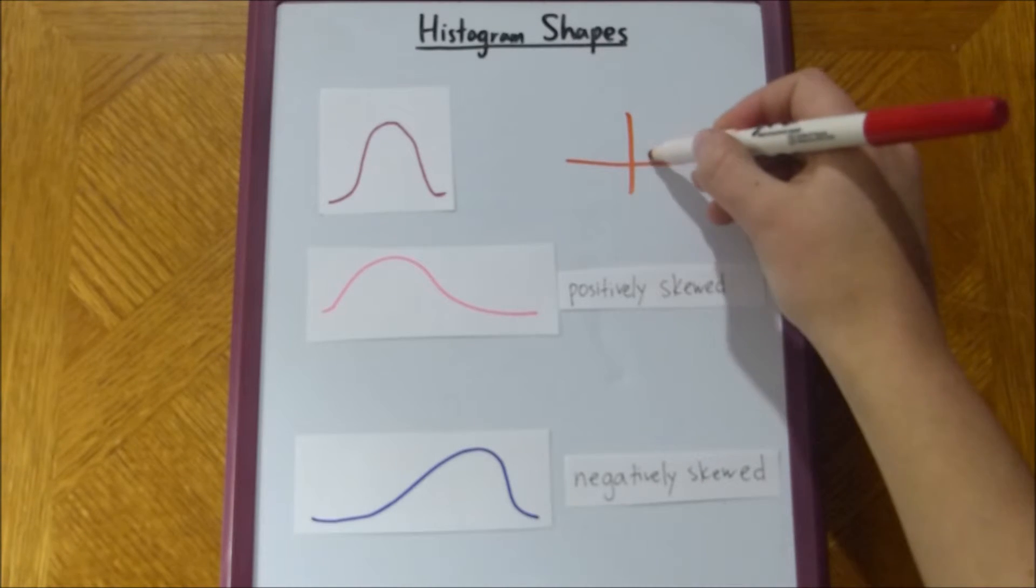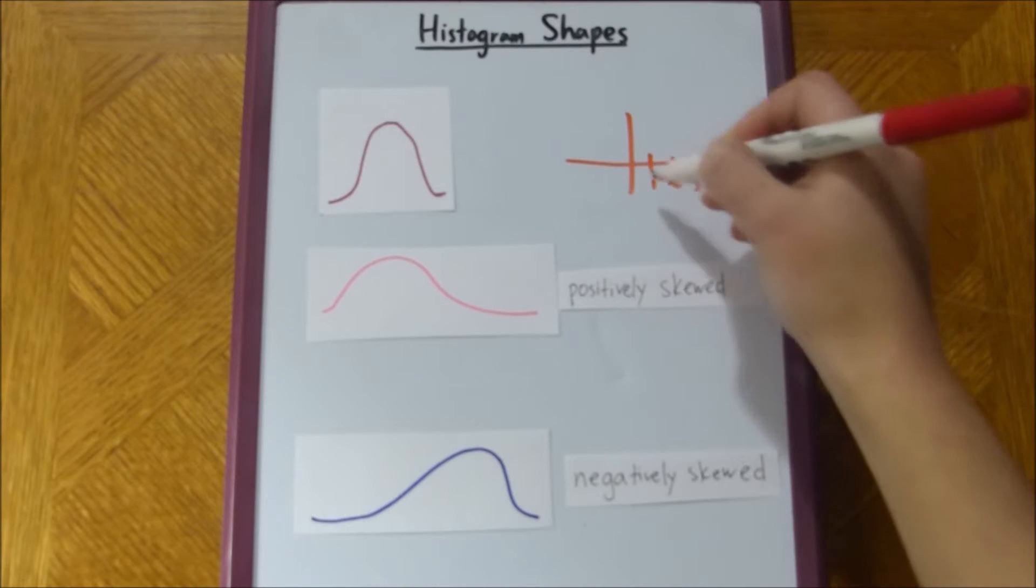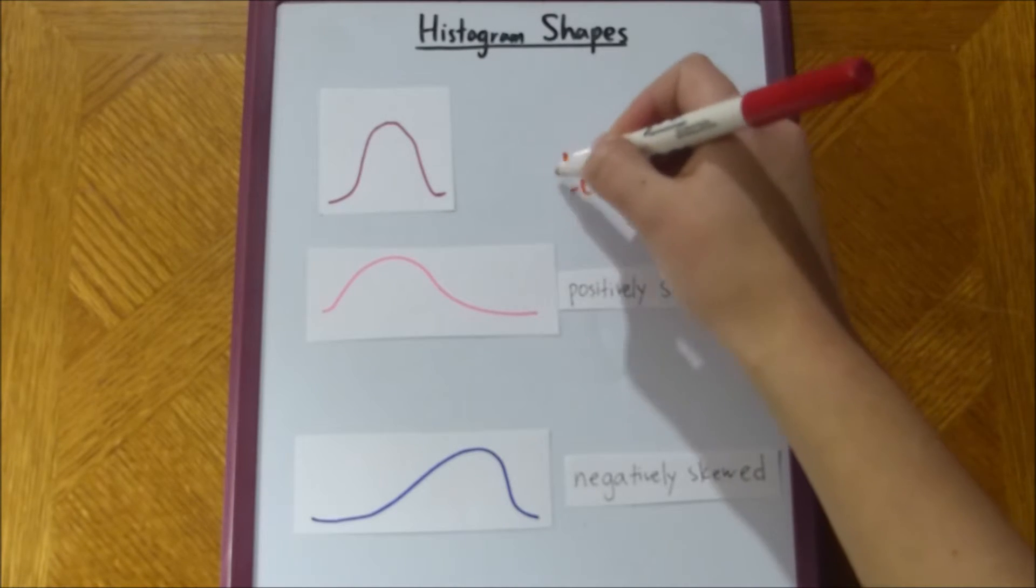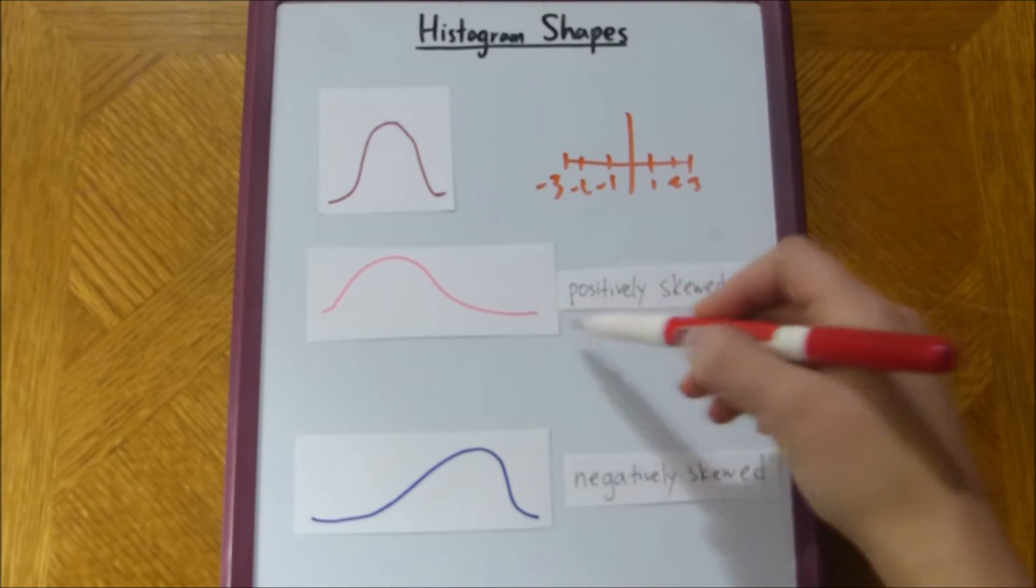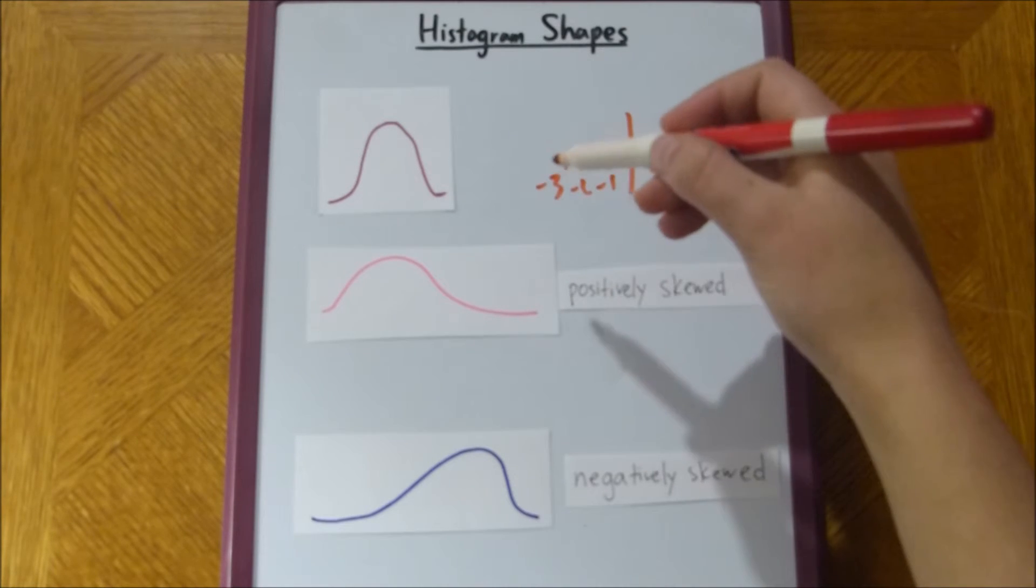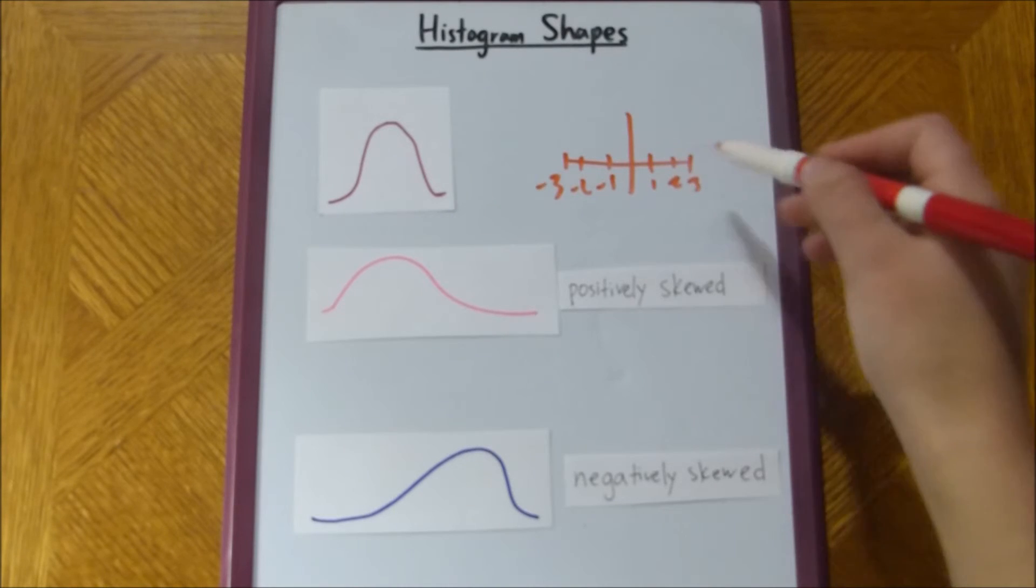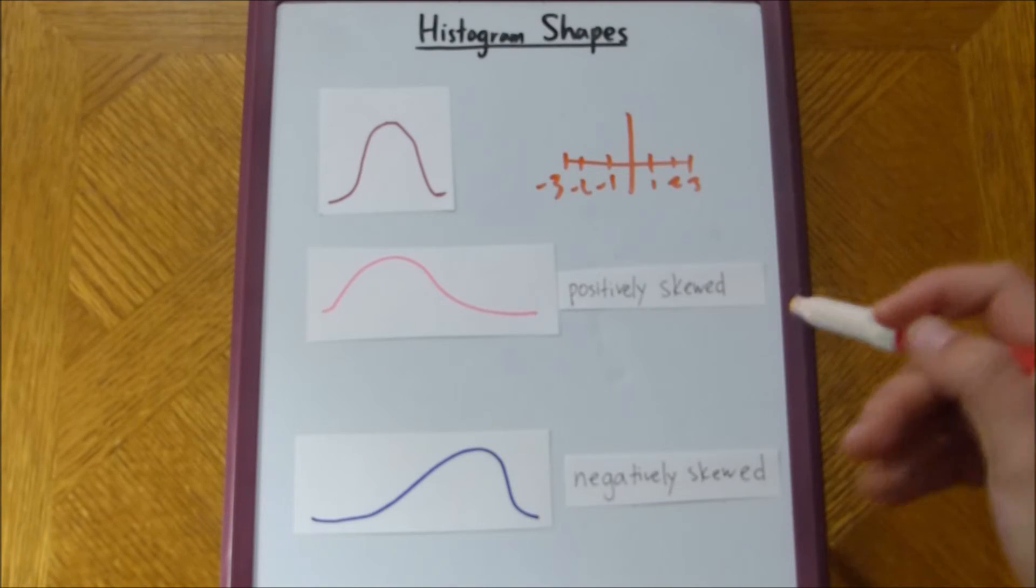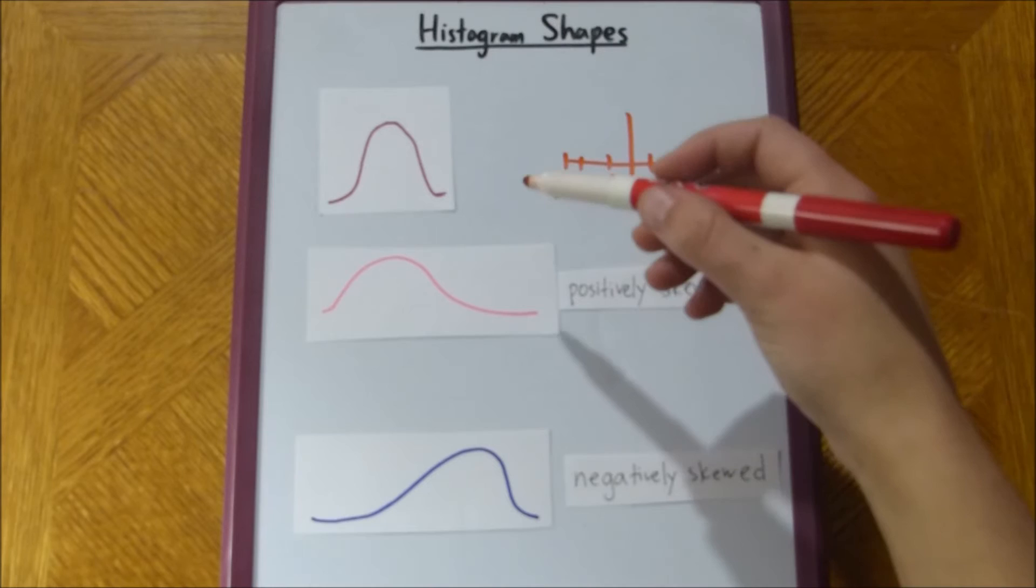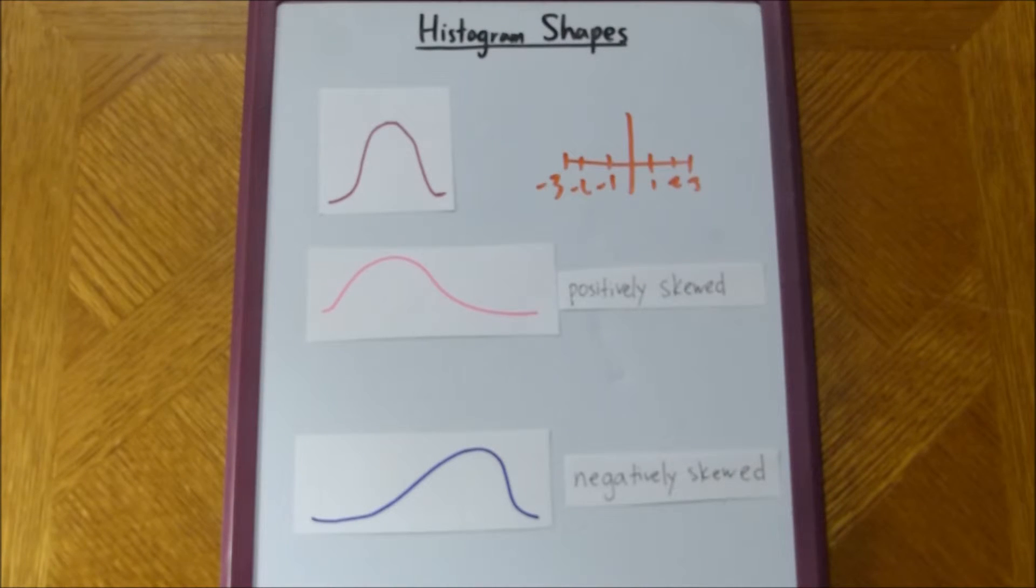and you have your positive x values running here, and your negative x values running there, the positively skewed histogram, its tail is on the positive end of the graph, but the negatively skewed one is on the negative side, right? So, that's just some quick little way to memorize that.